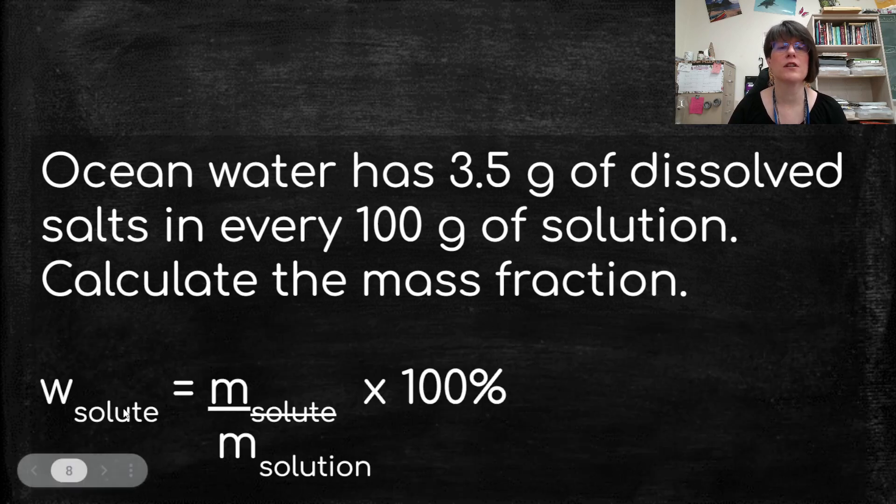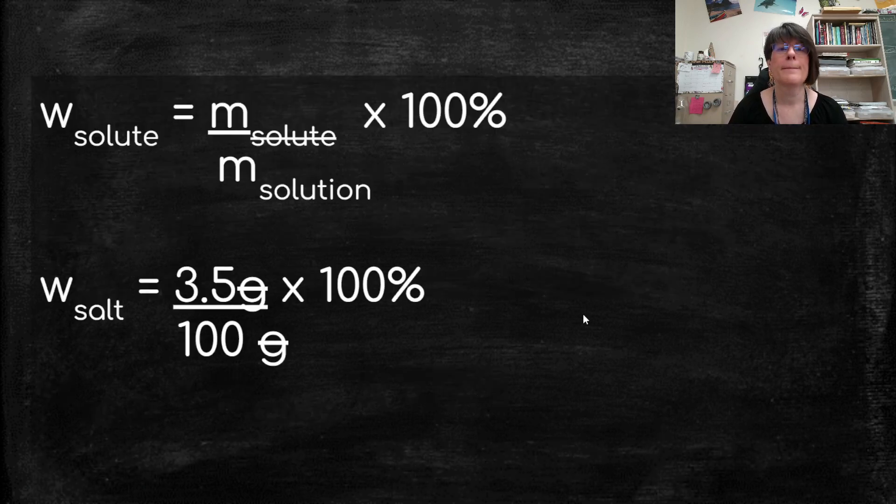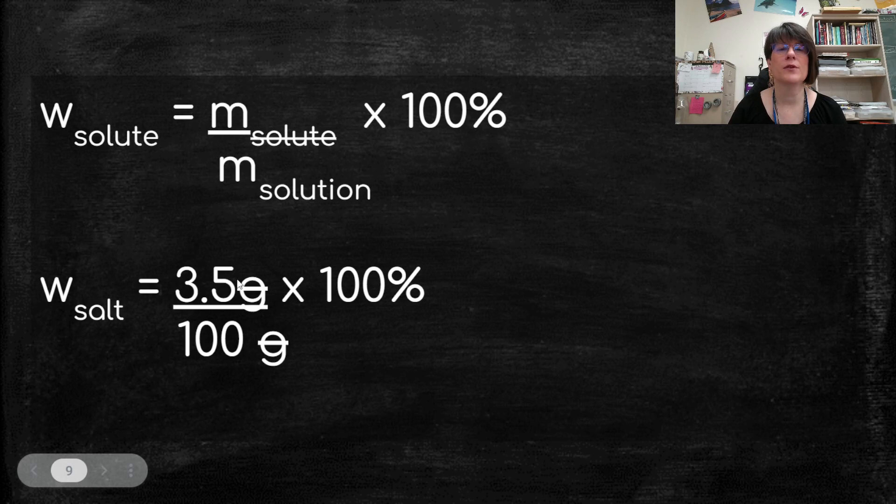So first, we start with our formula. The mass fraction of the solute equals the mass of the solute divided by the mass of the solution times 100%. We then plug in the numbers. We have 3.5 grams of solute, the salt, 100 grams of solvent, the water. Multiply that by 100, and we get 3.5%.